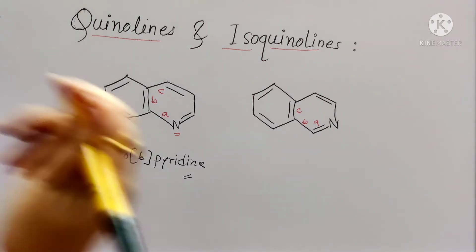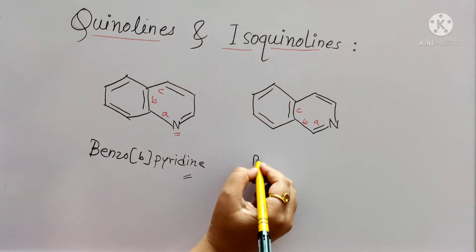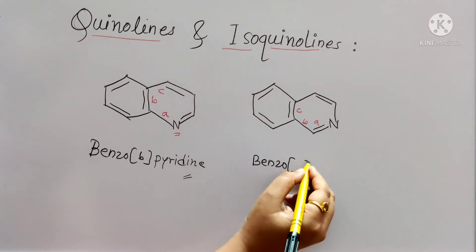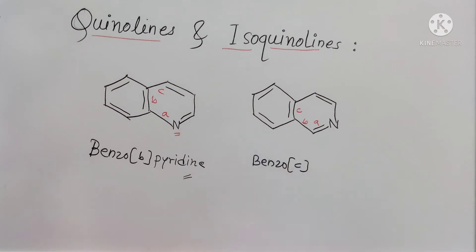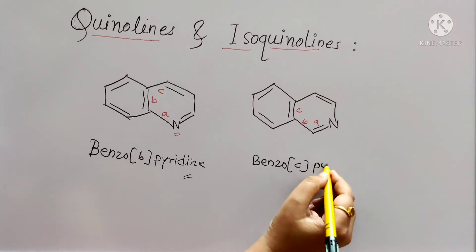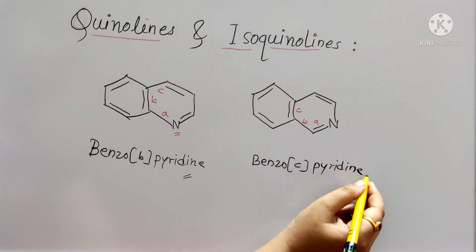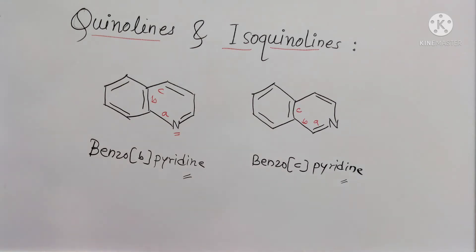So the name for quinoline will be: this is pyridine, to which a benzene ring is attached. To which position? B. So in brackets write B, followed by pyridine. This will be the IUPAC name for quinoline. Similarly, for isoquinoline, benzene is attached to the C position — in square brackets write C, followed by pyridine.